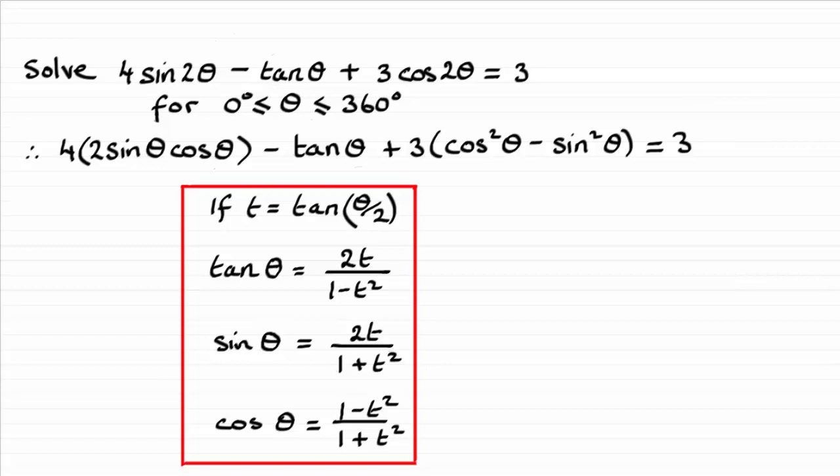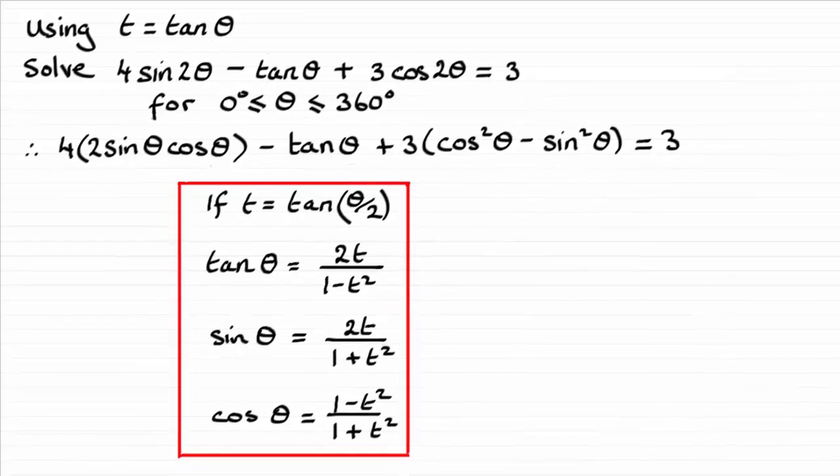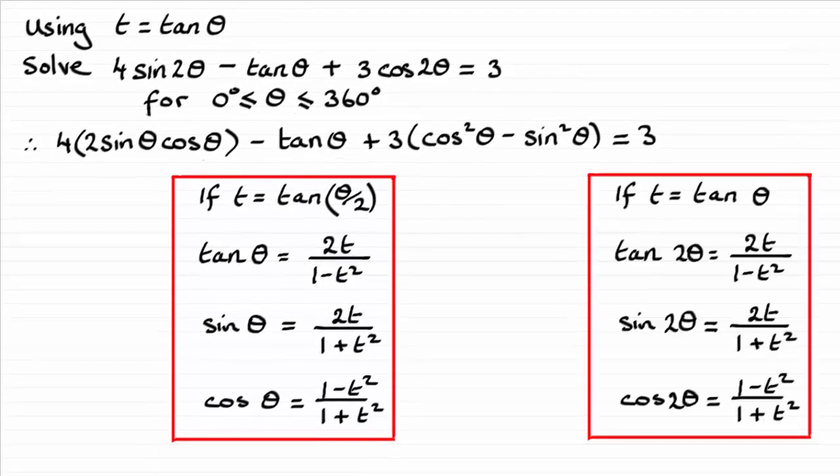Let's say instead of t equaling tan θ upon 2 we just say t equals tan θ. I'm just going to put that up here using t equals tan θ. What that means is that we just double the angle θ here. So what we get is a new set of formula that is if t equals tan θ, tan 2θ, sine 2θ, cos 2θ equals the same expressions in t as we had over here.